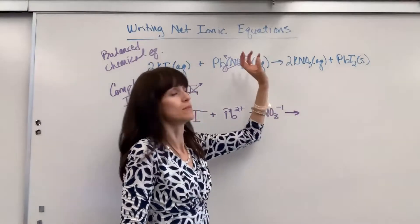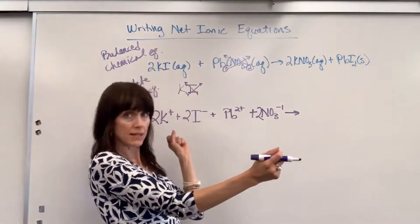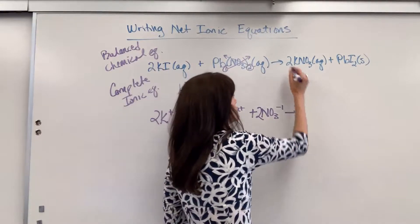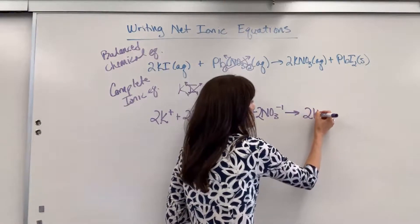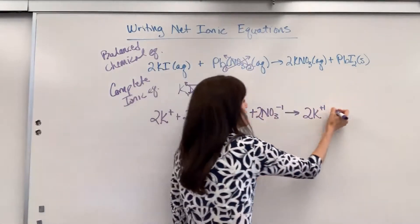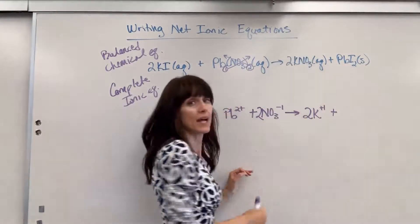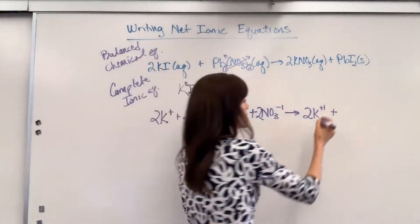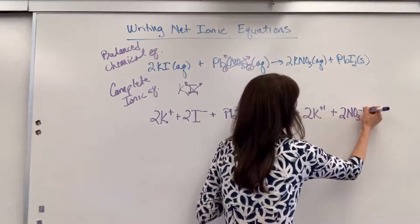So I have potassium nitrate. Dissociate this. We're going to have two of the potassium ions, that's a plus one. And check this out, that two distributes. I also have two of the nitrate ions.